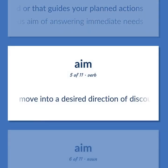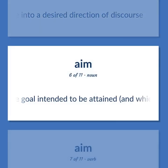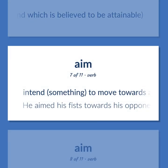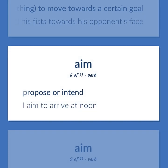Move into a desired direction of discourse. The goal intended to be attained, and which is believed to be attainable. Intend something — to move towards a certain goal. He aimed his fists towards his opponent's face. Propose or intend. I aim to arrive at noon.